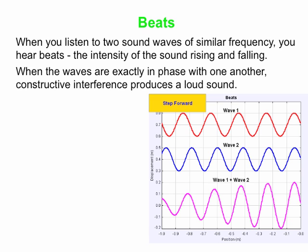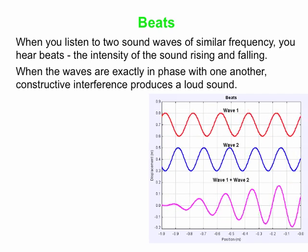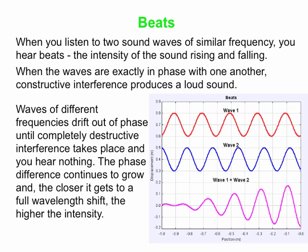It's constructive and destructive interference. The waves might start off constructively interfering, so you get a large amplitude. Then later on, the waves drift out of phase with each other and they completely cancel — you hear nothing. Then they drift out of phase even more until peaks line up with peaks and troughs line up with troughs again, giving you a big amplitude sound. It keeps cycling through that cycle of large and small intensity.